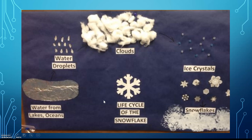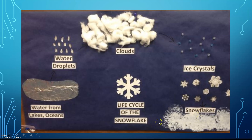Here is the life cycle of a snowflake. Water from lakes and oceans evaporates and becomes water droplets that then accumulate in clouds, that then come down to the earth as ice crystals and then as snowflakes.